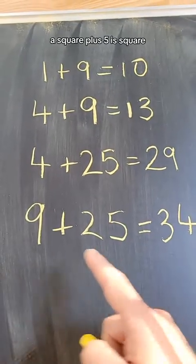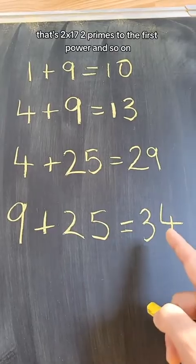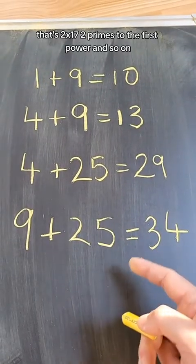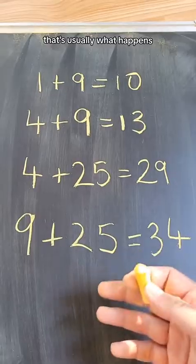9 plus 25, that's 3 squared plus 5 squared, that's 2 times 17, 2 primes to their first power, and so on. That's usually what happens, but not always.